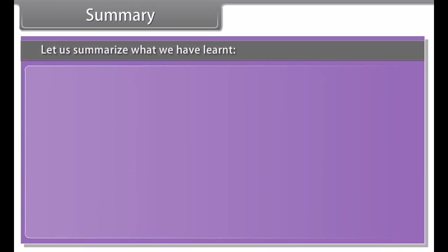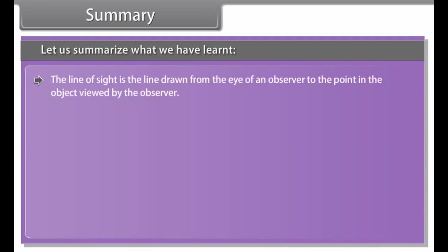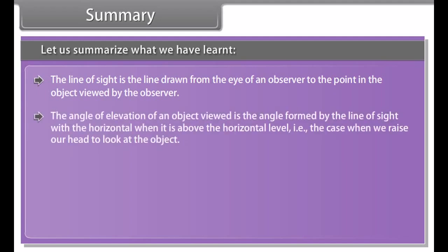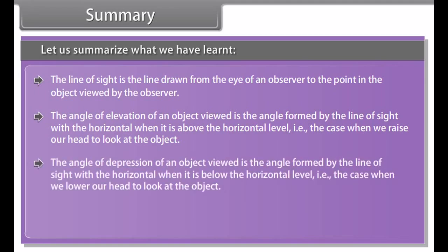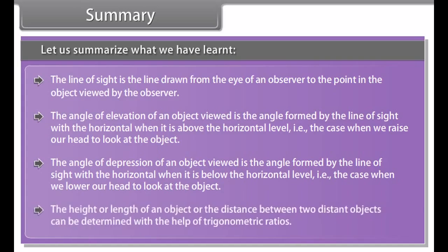Summary: The line of sight is the line drawn from the eye of an observer to the point on the object being viewed. The angle of elevation is the angle formed by the line of sight with the horizontal when the object is above the horizontal level — that is, when we raise our head to look at the object. The angle of depression is the angle formed by the line of sight with the horizontal when the object is below the horizontal level — that is, when we lower our head to look at the object. The height or length of an object or the distance between two distant objects can be determined with the help of trigonometric ratios.